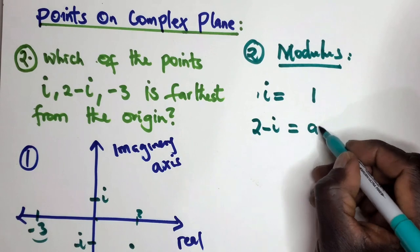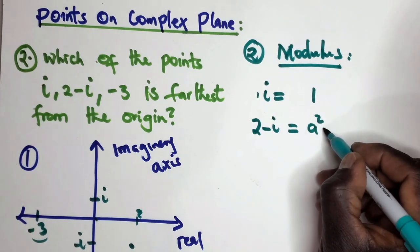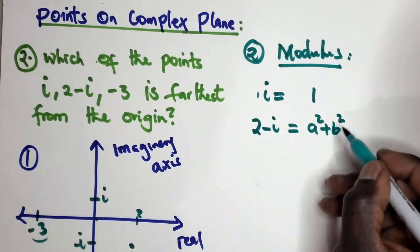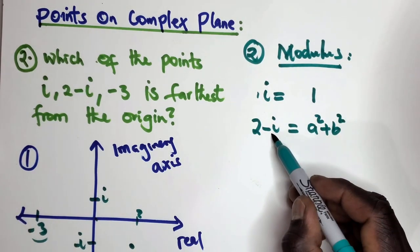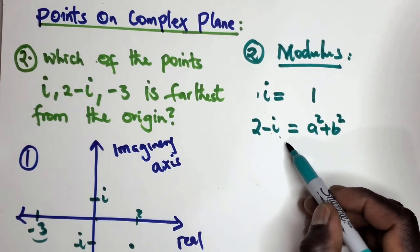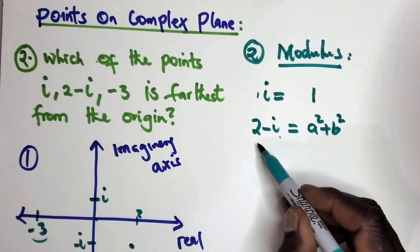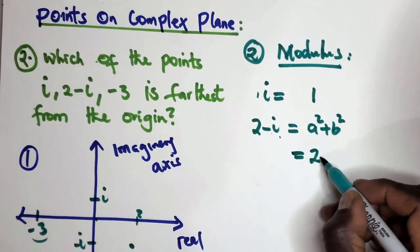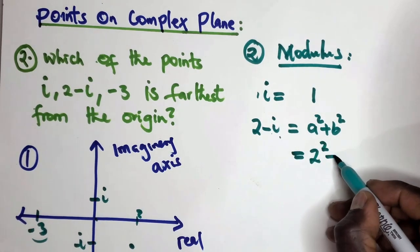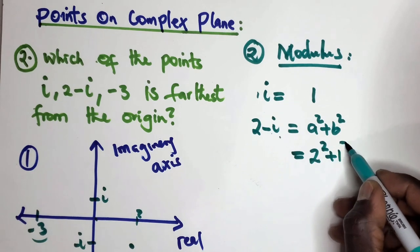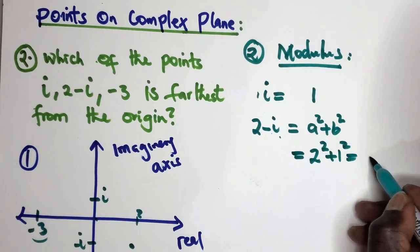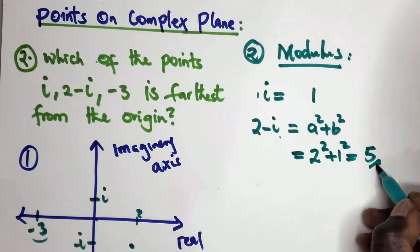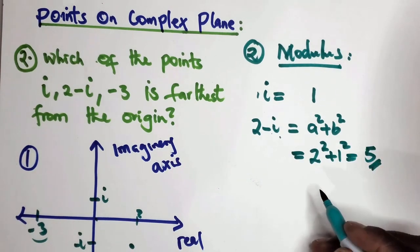this is just A squared plus B squared. B is minus one and A is two. So this is two squared plus one squared, which gives you five. It's as simple as that.